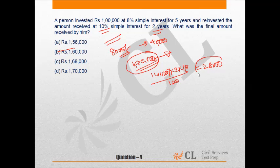The amount was Rs 1 lakh 40,000 so total amount would be Rs 1 lakh 40,000 plus Rs 28,000. That is equal to Rs 1 lakh 68,000. Hence our answer is option C.